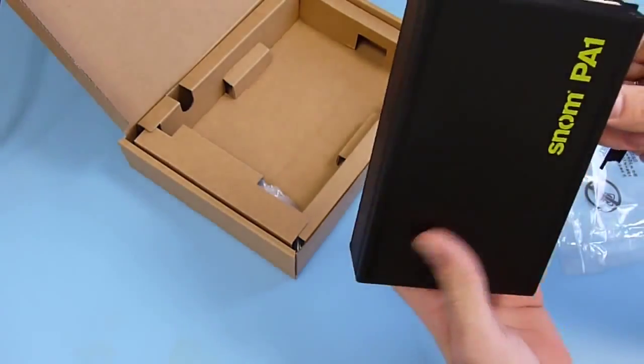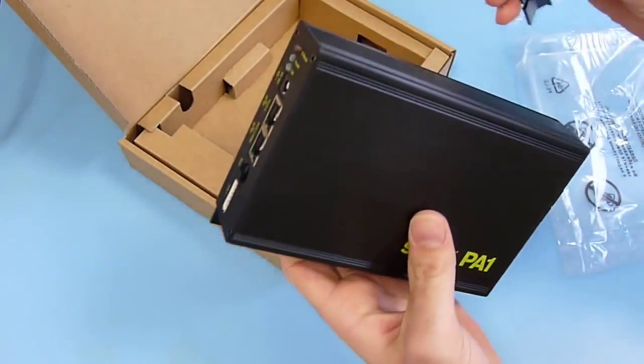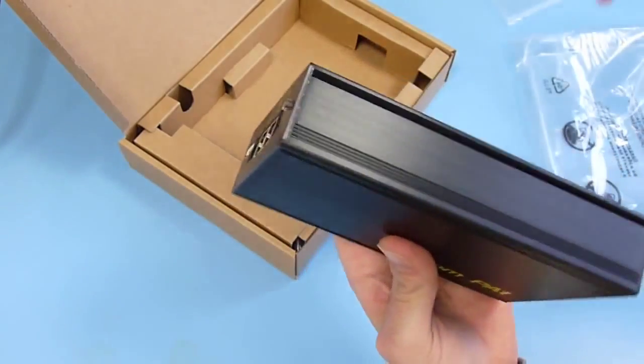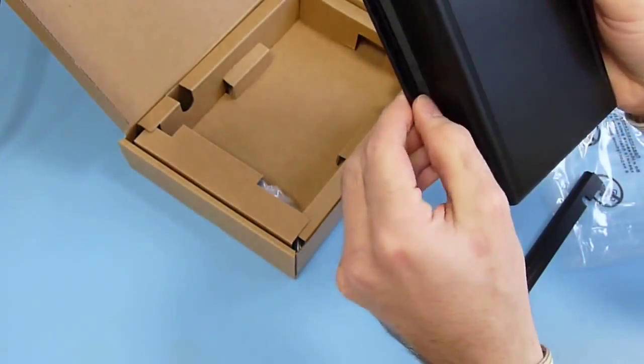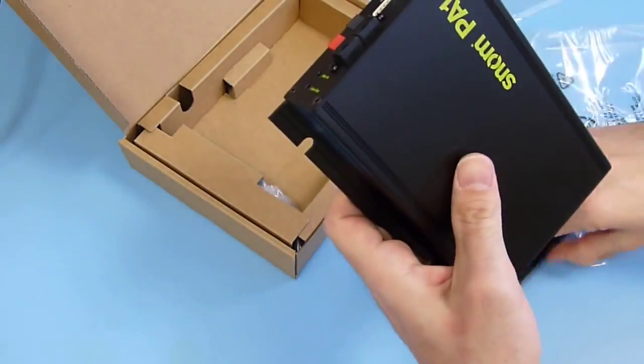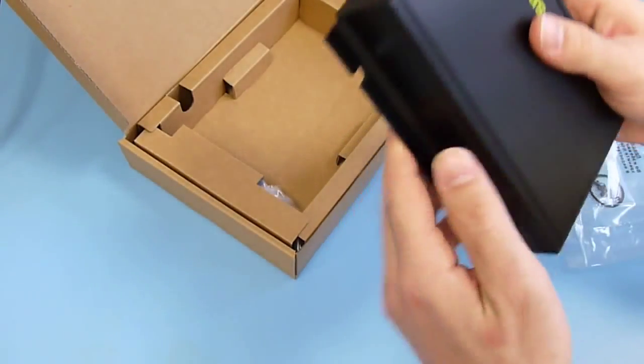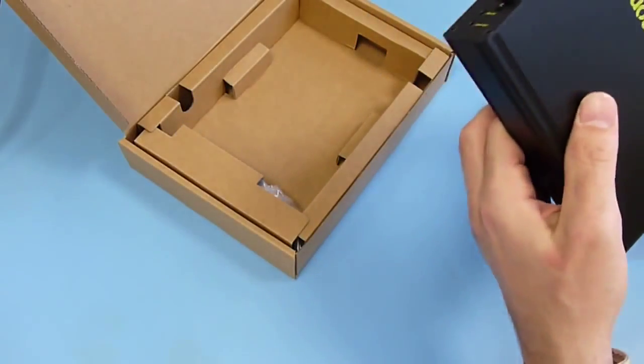You can see they have a removable bracket that is for the wall mount. So you can either assemble them or remove them depending on your application. So here we are going to remove them.